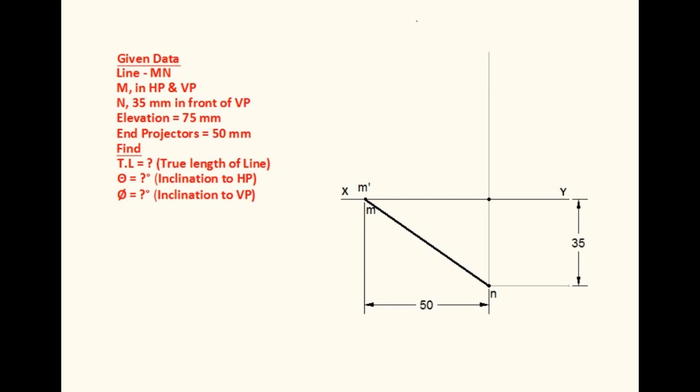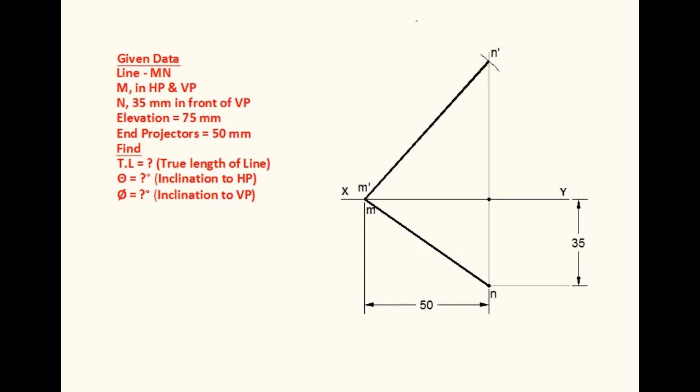Join M and N — this line is the plan of line MN. The length of elevation is given as 75mm, so take 75mm in the compass, with point M dash as center, and cut an arc on the projector above the XY line. This point is N dash. Join M dash and N dash, which is the elevation of the line MN.